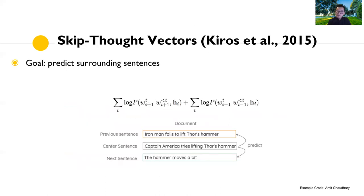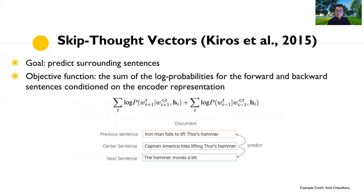One example before BERT is skip-thought vectors, developed at the University of Toronto in 2015. These are recurrent language models that predict the surrounding sentences. The objective is the sum of the log probability of the forward and backward sentences conditioned on the encoder parameters. Given a center sentence, the model tries to predict the previous sentence and the next sentence by looking at the log probability conditioned on the encoder parameters.